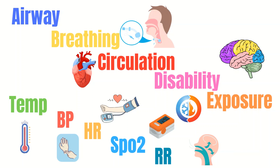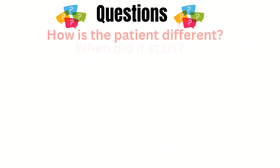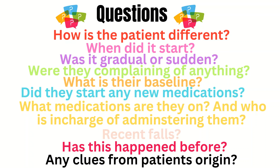As an ER nurse, you must gain the skills to accurately and rapidly perform the initial assessment. Important questions to ask include: How is the patient different or altered? When did it start — was it gradual or sudden? Were they complaining of anything before becoming altered? What is their baseline? Did they start any new medications, and who administers them? Did they fall recently, and are they on blood thinners? Has this happened before? And were there any clues at the scene, like empty bottles of alcohol or pill bottles?